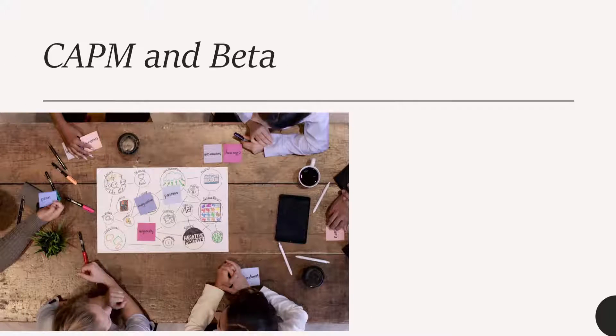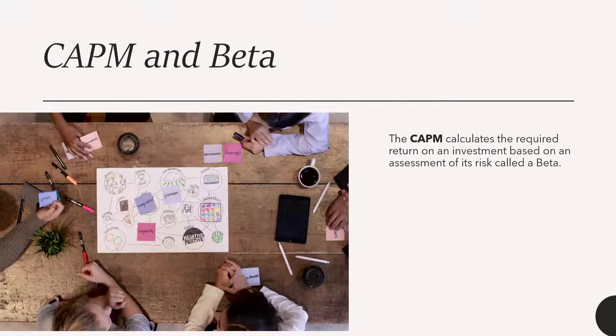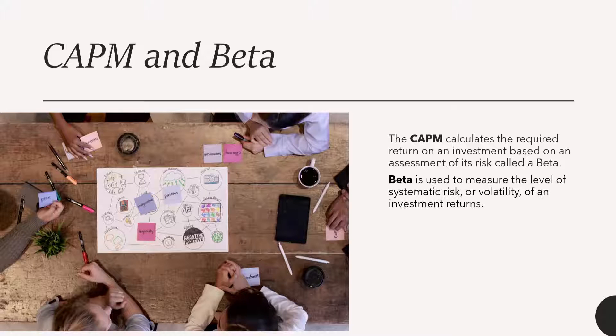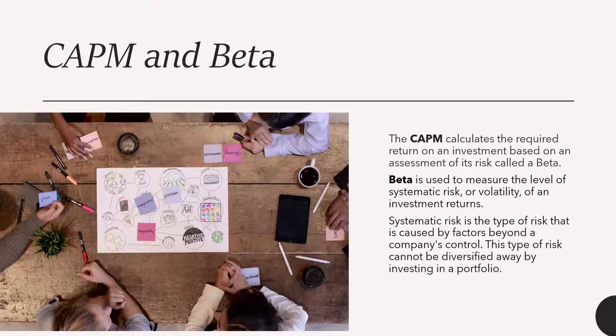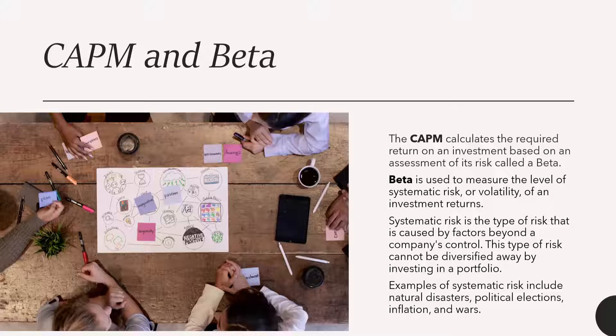So what is CAPM and what are betas? CAPM calculates the required return on investment based on an assessment of its risk called a beta. The beta is used to measure the level of systematic risk or volatility of an investment returns. Systematic risk, as opposed to unsystematic risk, is the type of risk caused by factors beyond the company's control. This type of risk cannot be diversified away by investing in a portfolio. Examples of systematic risk include natural disasters, political elections, inflation and wars.